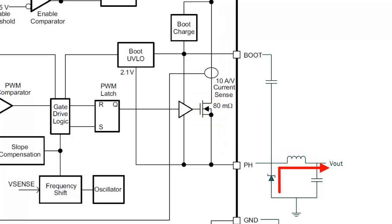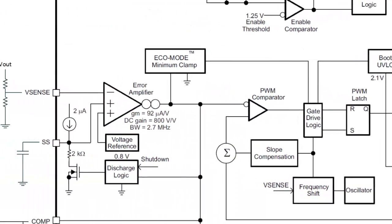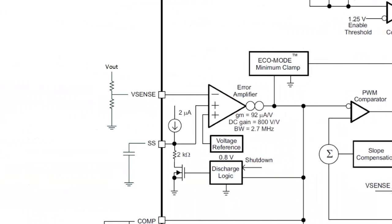A catch diode conducts the inductor current when the FET is off. The output voltage is regulated by using a voltage divider to set the sense voltage going back to the error amplifier. The divider resistors are chosen to scale the output voltage to an internal 0.8 volt reference.